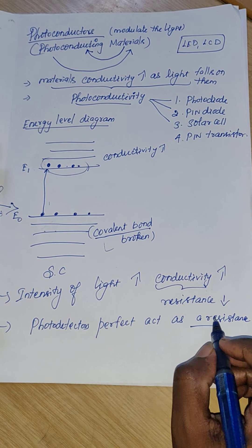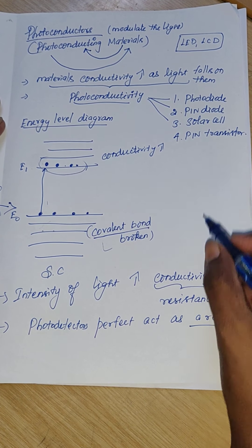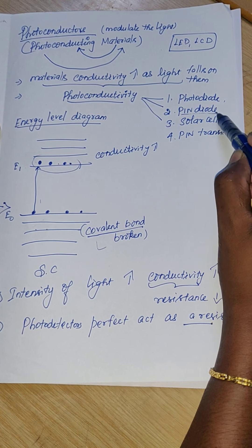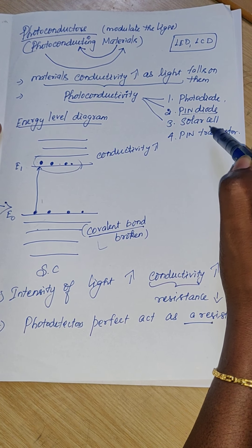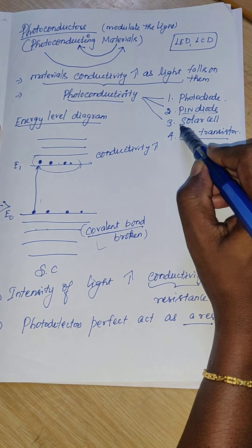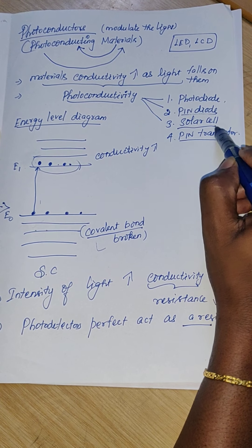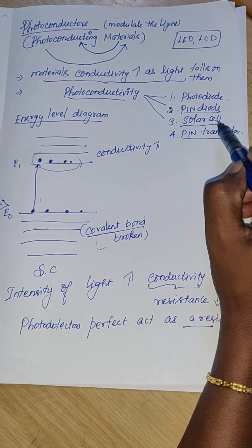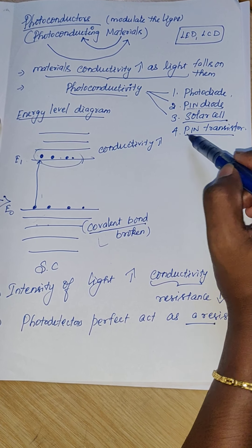The same phenomena is common for photodiodes, PIN diode, PIN transistor, and solar cell. The solar cell is also called a photovoltaic cell.